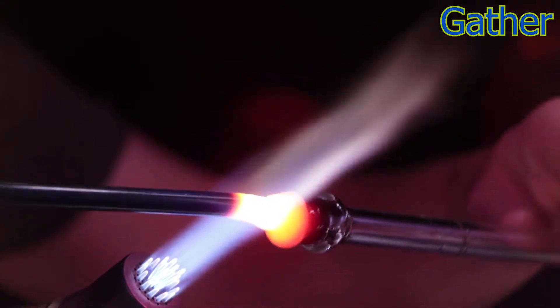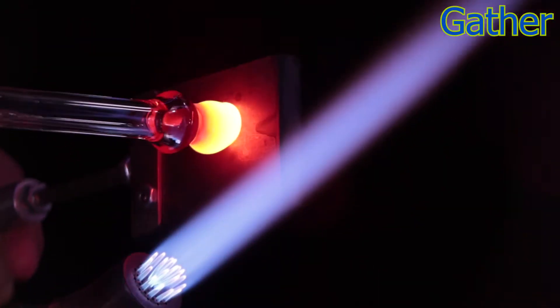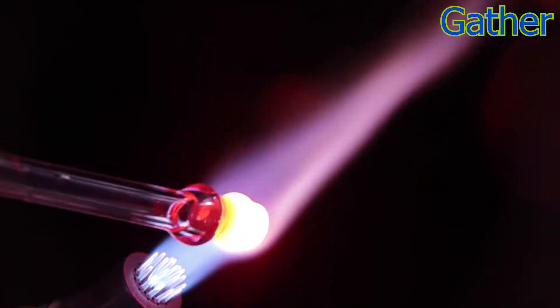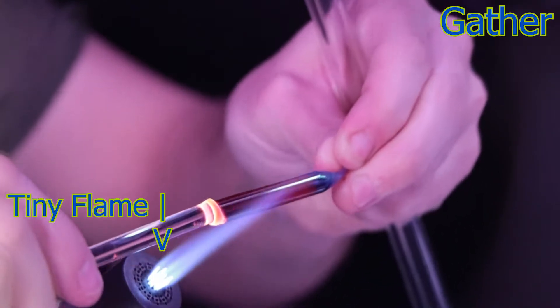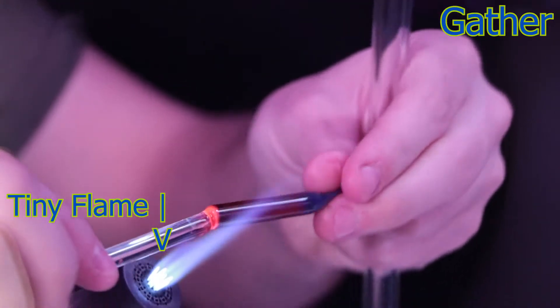And now that I'm done gathering up a nice glob here, I'm going to use my Marver just to shape it a little bit before I add another color. And that's just to speed up the gathering process. You want to be careful not to fold the glass over and create any air pockets.